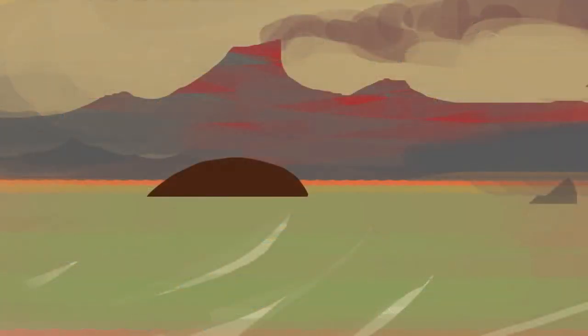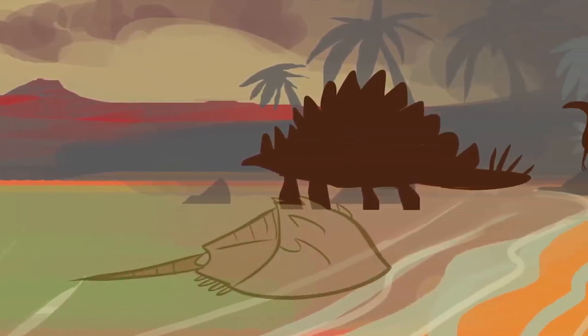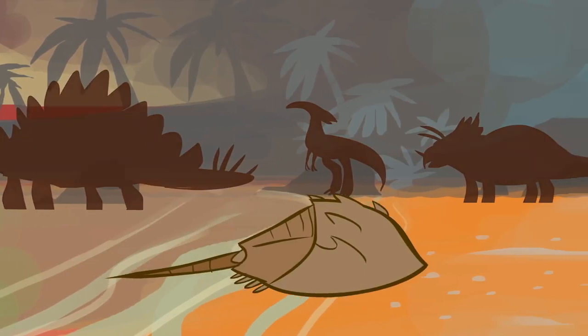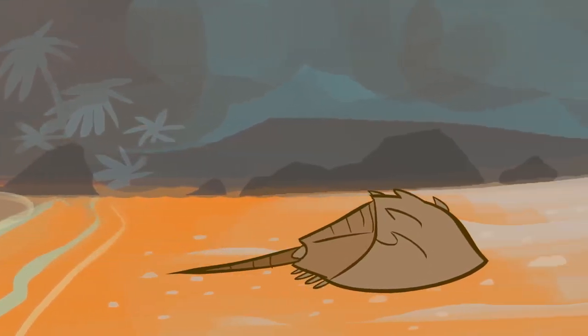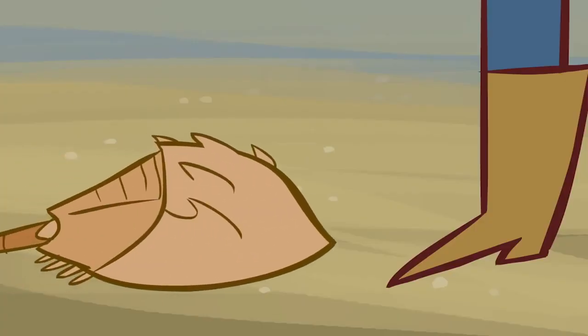Horseshoe crabs survived mass extinction events that wiped out over 90% of life on Earth and killed off the dinosaurs. But they're not invincible, and the biggest disruptions they've faced in millions of years come from us.